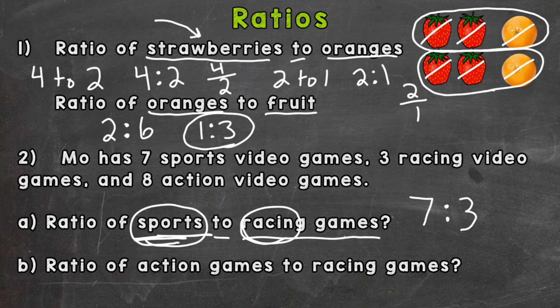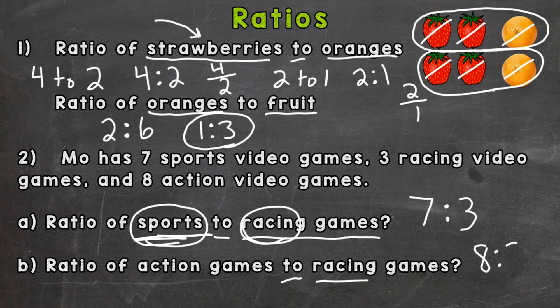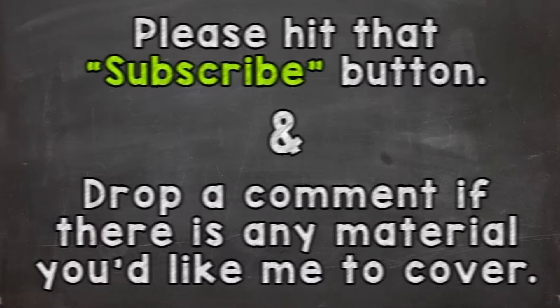For part B, the ratio of action games to racing games: there are eight action games, which comes first, to three racing games. So there are eight action games to every three racing games — already in simplest form, just like part A. There you have it — that's how we write ratios for different types of situations. Hopefully that helped. Thanks so much for watching — until next time, peace!